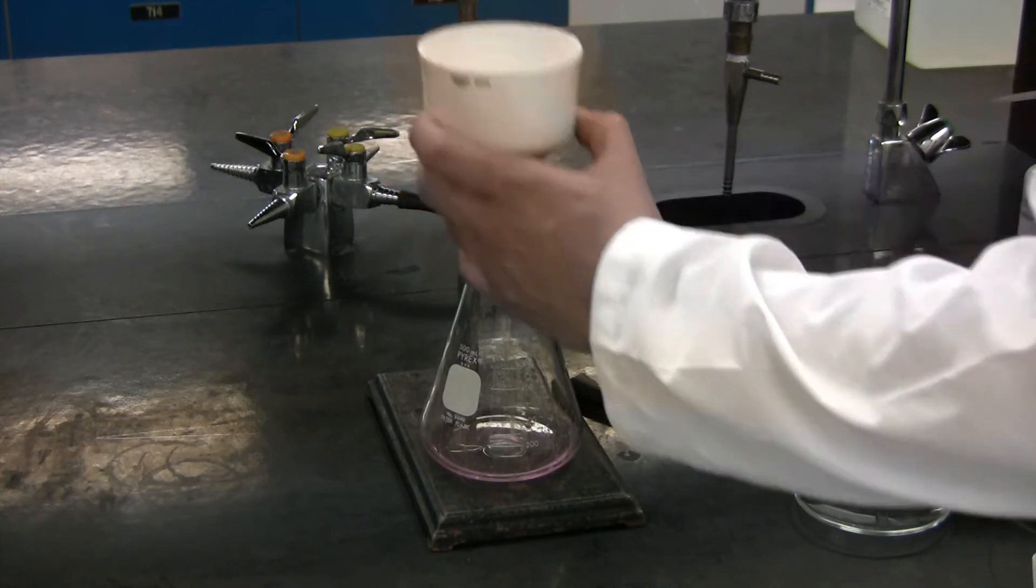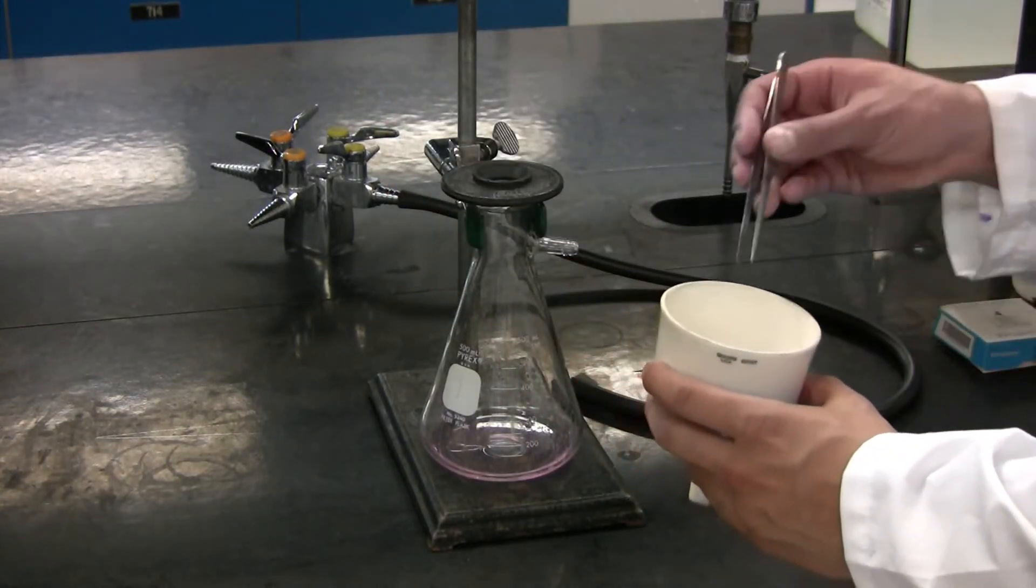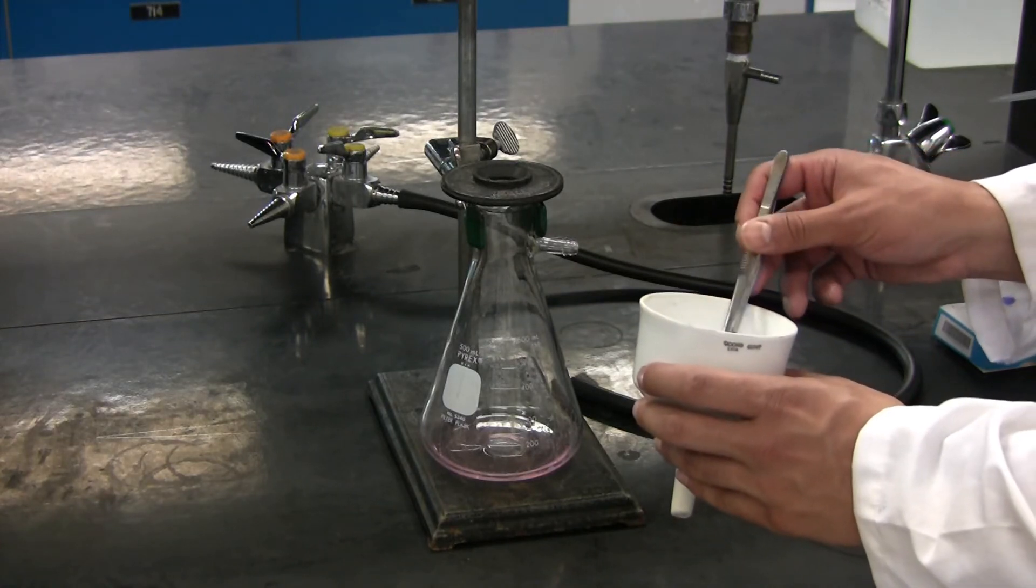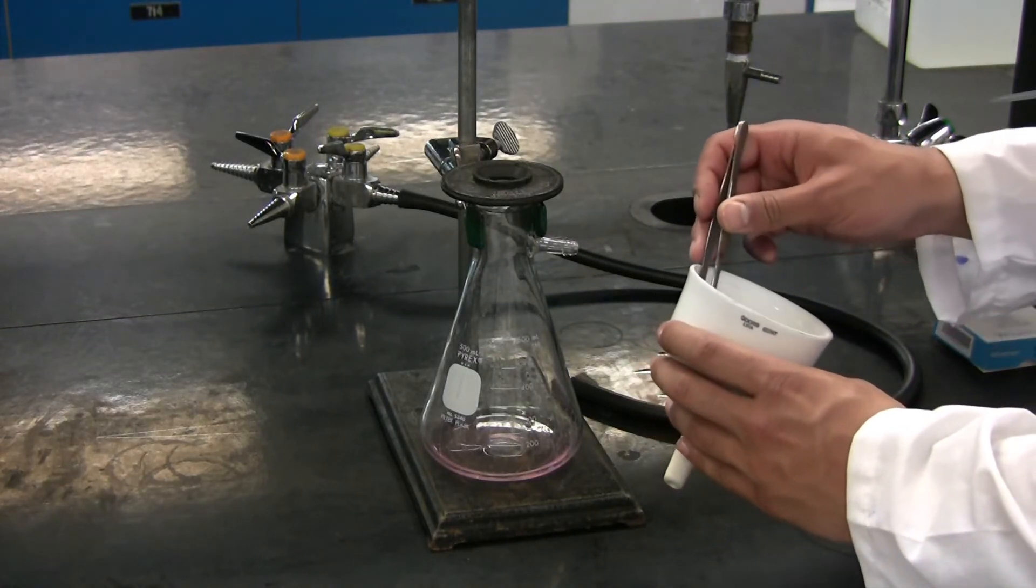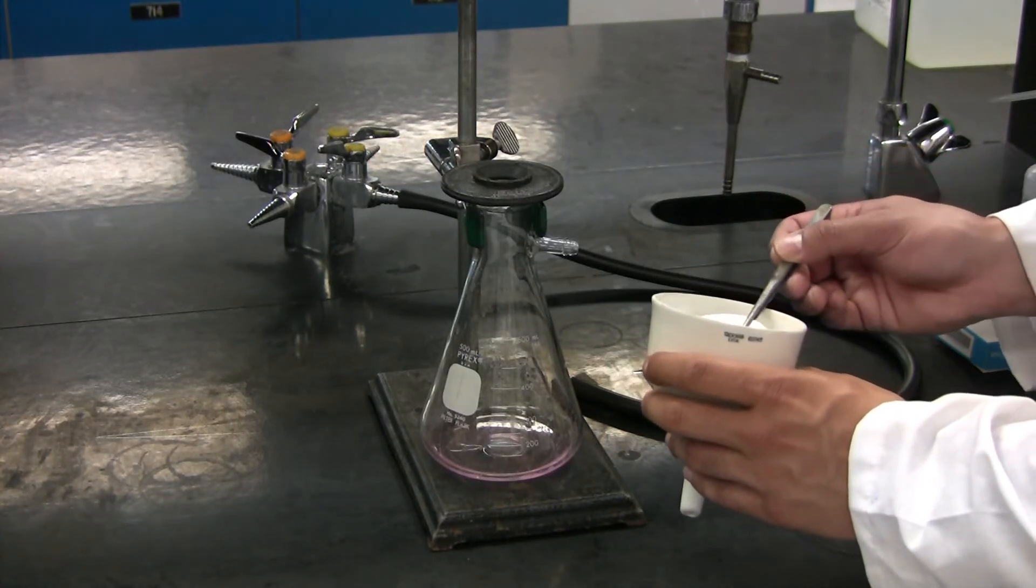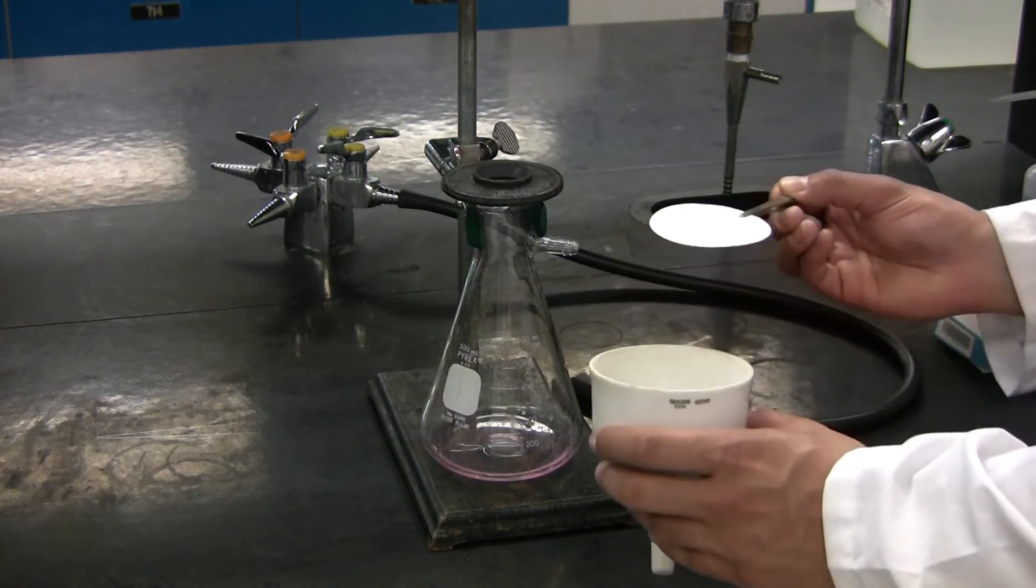You can remove the Buchner funnel, and using a pair of tweezers, gently remove the filter paper. Once removed, place this onto a watch glass.